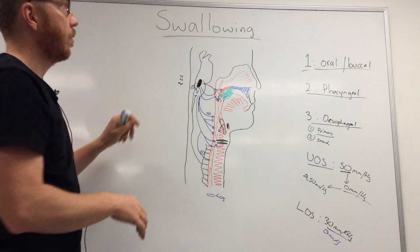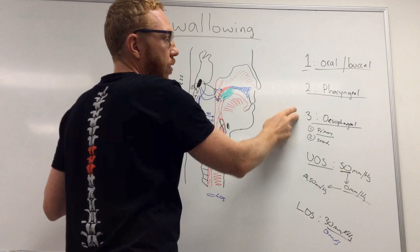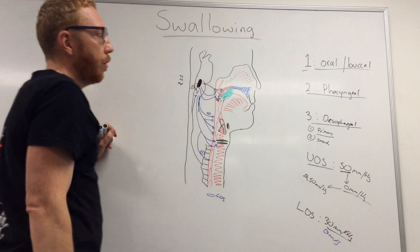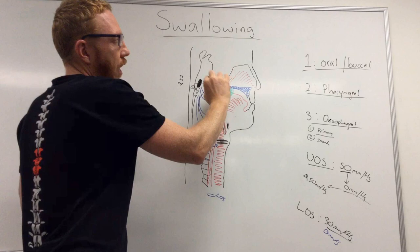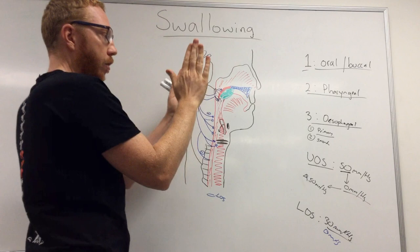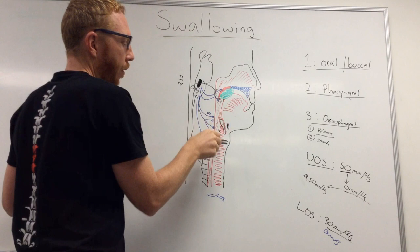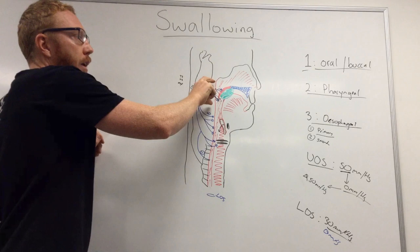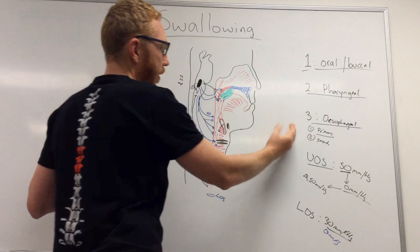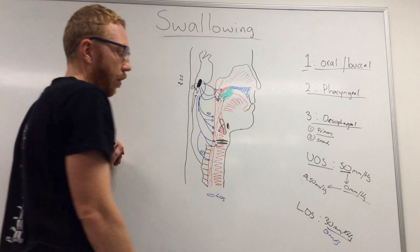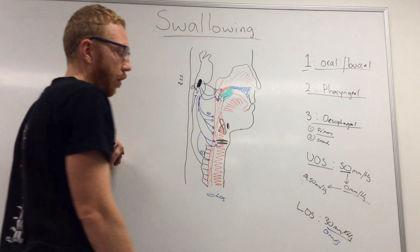To reiterate: swallowing is broken into three phases — oral, pharyngeal, and esophageal. The oral phase is about getting the bolus to the back of the pharynx. The pharyngeal phase has six sub-phases: sensory pickup, soft palate elevation, palatopharyngeal narrowing, larynx elevation, esophageal sphincter opening, and pharyngeal constrictor activation (superior, middle, and inferior). The esophageal phase uses primary peristalsis, with secondary peristalsis clearing any residual bolus.